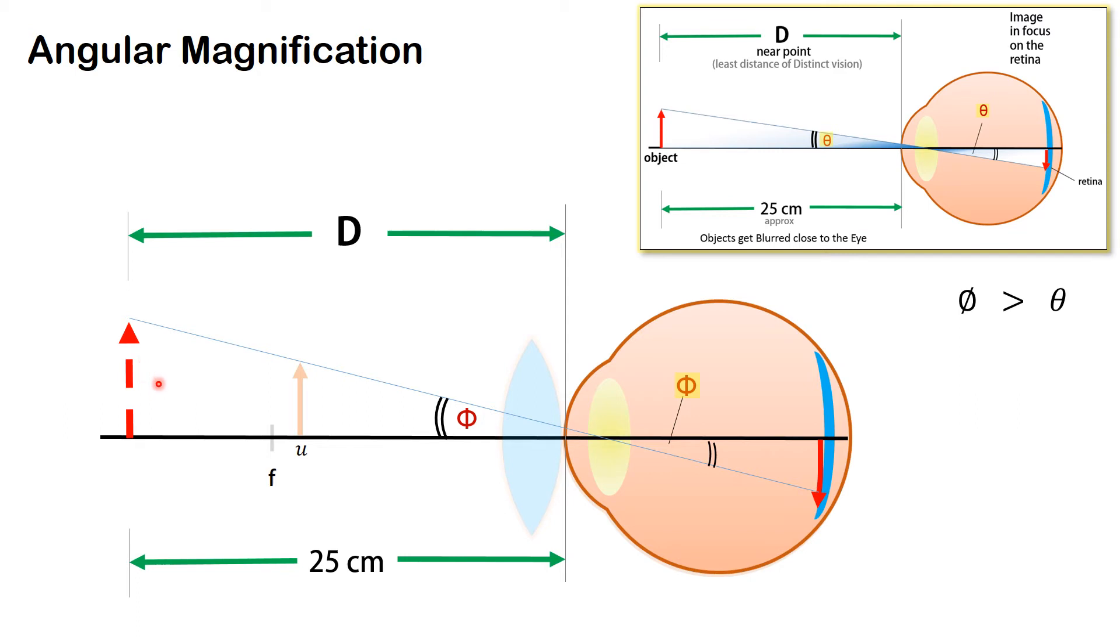Now this virtual image is larger than the object and therefore it subtends a larger angle phi on the retina of the eye compared to a situation where there is no lens between the eye and the object.